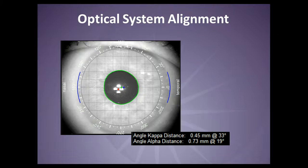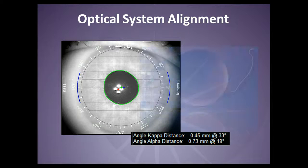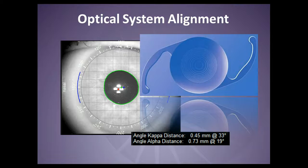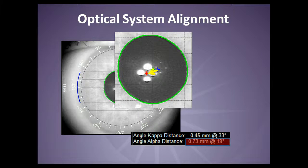Why are these indices important? In a monofocal IOL or an aspheric with a large sweet spot, a high angle alpha value is not a problem. However, if you're considering a toric or a multifocal IOL, an angle alpha over a half millimeter should be a red flag. If the center of the IOL's optic is off from the patient's alignment, it will produce some amount — possibly a large amount — of coma and other higher-order aberrations. Cataract surgeons should always consider the angle alpha and kappa before deciding on the IOL treatment plan.